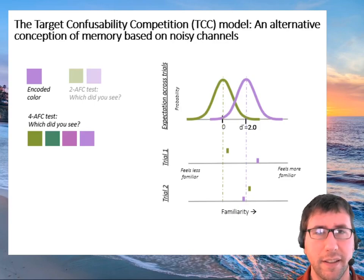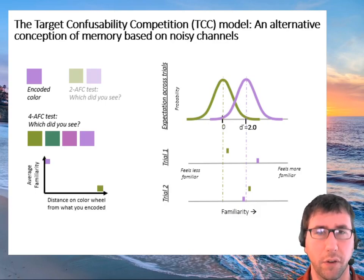And the insight of the TCC model is just to consider what happens in a four-AFC test instead of this two-AFC test. In particular, this four-AFC test reveals quite a lot. In this situation, you're now asked to choose which of these four colors you saw. Obviously the purple color you saw still gets a familiarity boost, the green color still gets none, and the question is what about those other two colors? Purple gets a boost because it is the color you saw, green gets none because it's far away, it's not very similar. But obviously a color one degree away from that purple color on the color wheel would also get a boost. People wouldn't even be able to tell them apart.